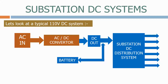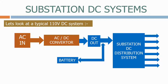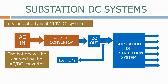In case the AC system fails, we have a backup substation battery. Under normal conditions, the battery will be charged by the AC to DC converter. The AC to DC converter therefore needs to be rated for the full DC system load and the charging current necessary for the battery.